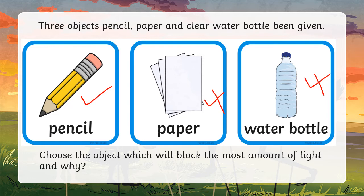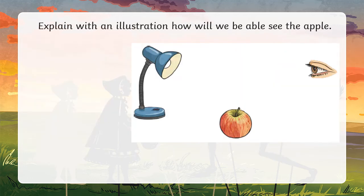Now we are going to explain with an illustration how we will be able to see the apple. Your eye is here, the light source is here, and apple is here. So how are we going to see? How we will be able to see the apple?